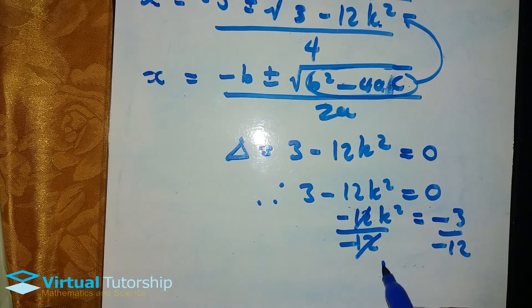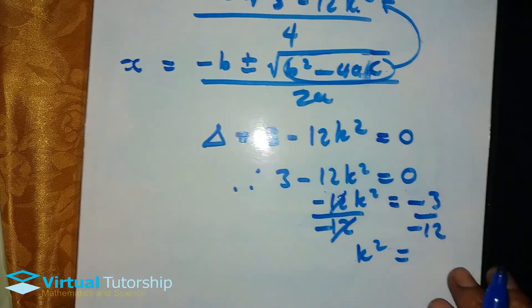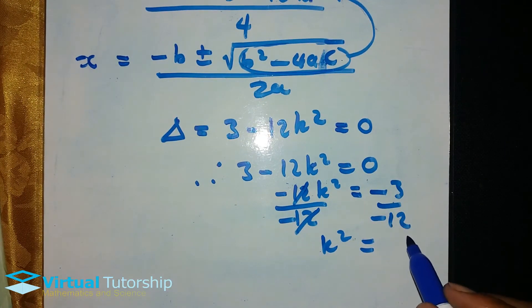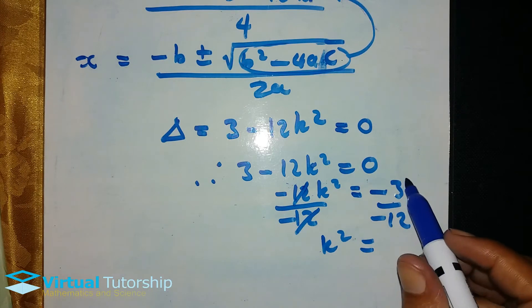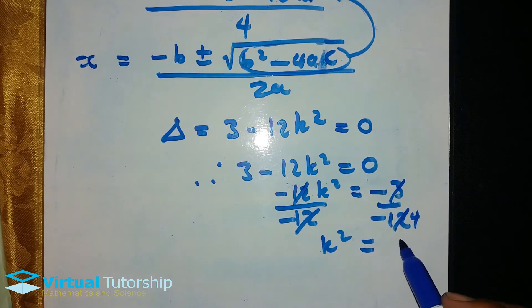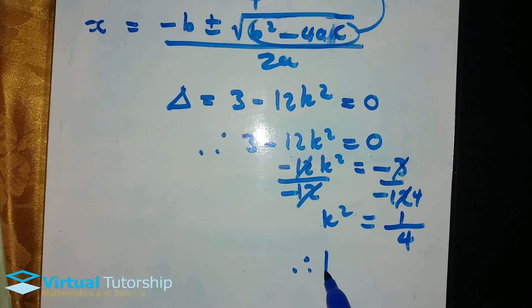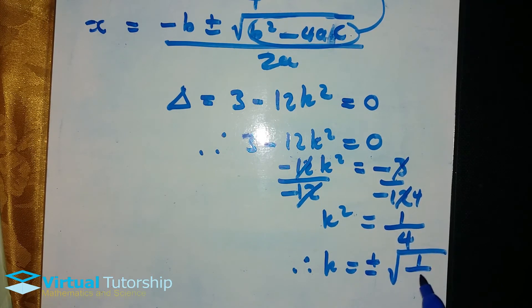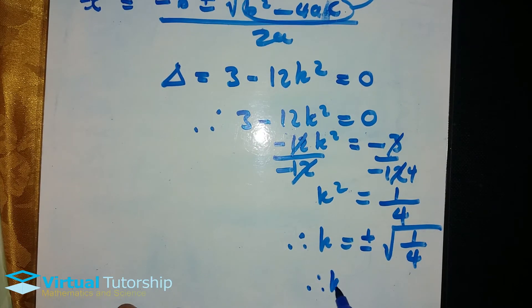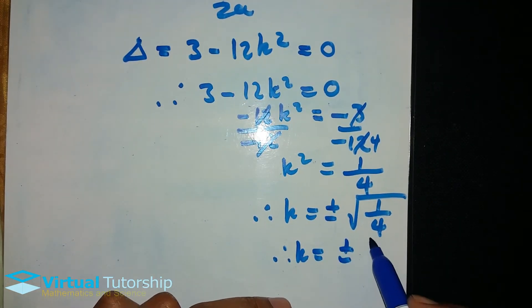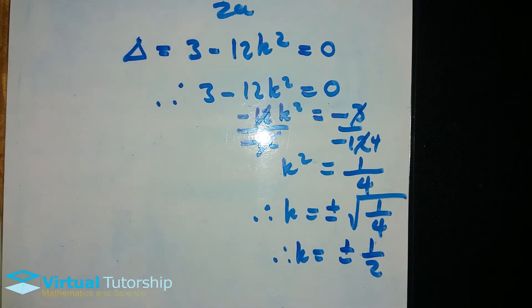This one divides that one. So k squared is equal to negative over negative, which is positive 3 over 12, which simplifies to 1 over 4. Therefore k equals plus or minus the square root of 1 over 4. Therefore k is equal to plus or minus 1 over 2.